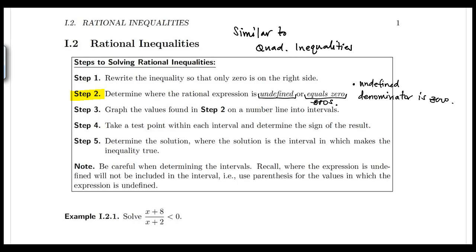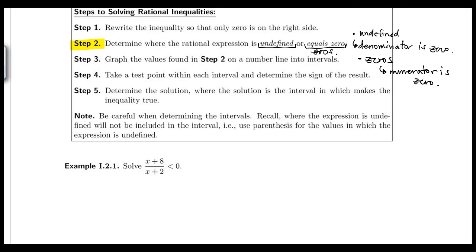You're going to find where the inequality is undefined — that's when the denominator is zero — and where the inequality equals zero — that's when the numerator is zero. Steps three, four, and five are the same as the quadratic inequality steps: take the values found in step two, place them on a number line, take test points, and determine the solution. Remember, the solution is the interval that makes the inequality true.